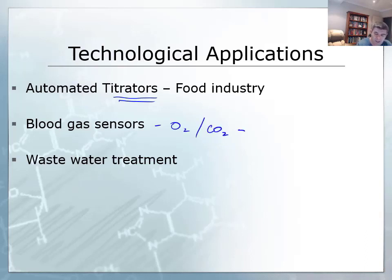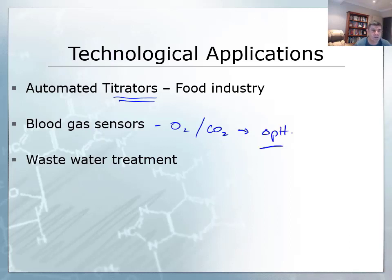Carbon dioxide in particular, when present in the blood, can change the pH, and therefore there are important consequences associated with ensuring good blood chemistry in terms of pH, as well as monitoring to make sure that levels don't fall too high or too low.